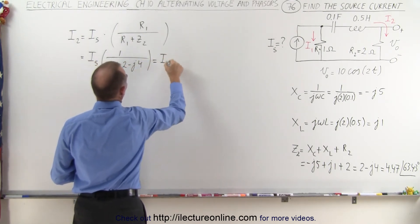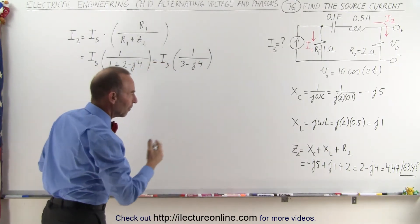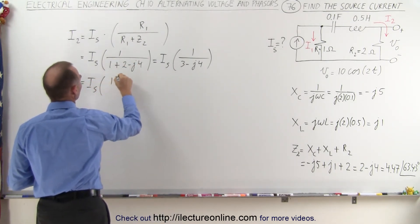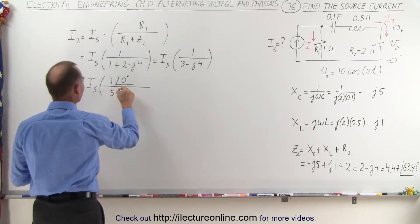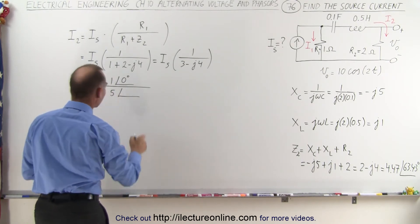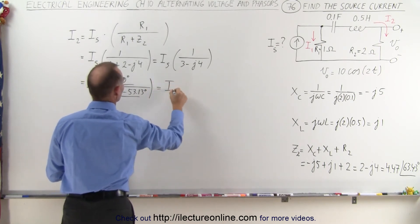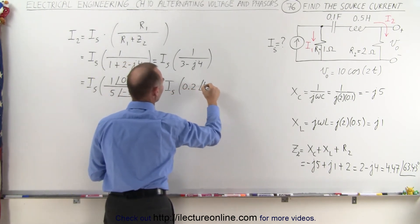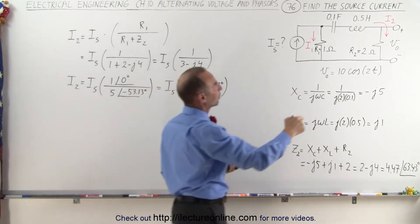This is equal to the source current times 1 divided by 3 minus j4. Now we want to put that into magnitude and phase angle format. So this is equal to I source times 1 at 0 degrees divided by 5 at minus 53.13 degrees. That gives us I source times 0.2 with a phase angle of positive 53.13 degrees.